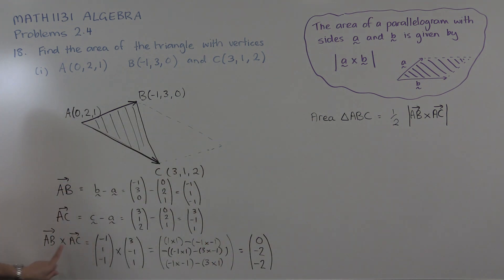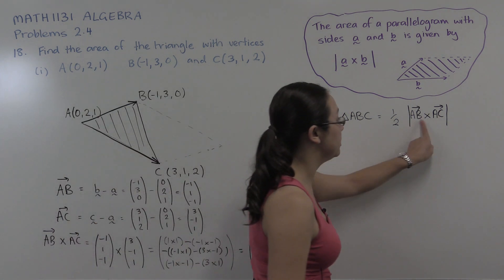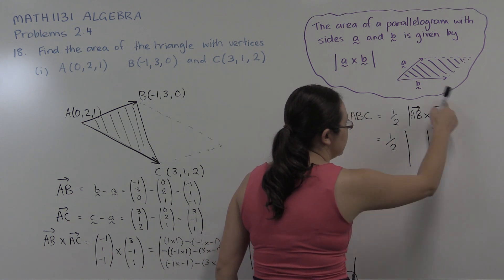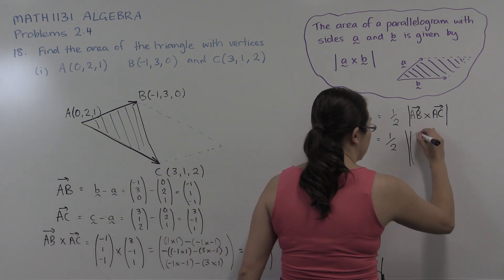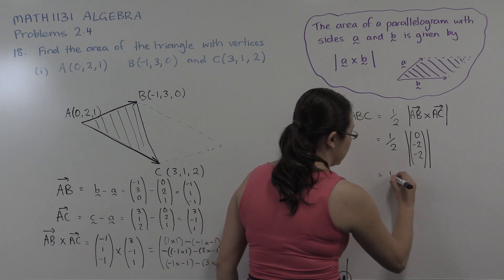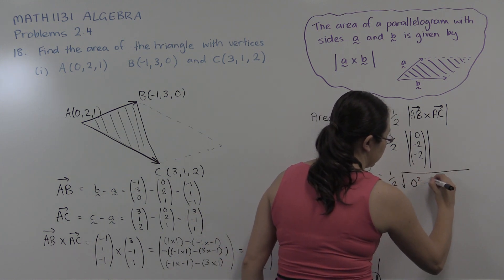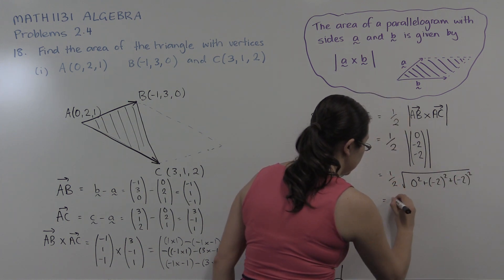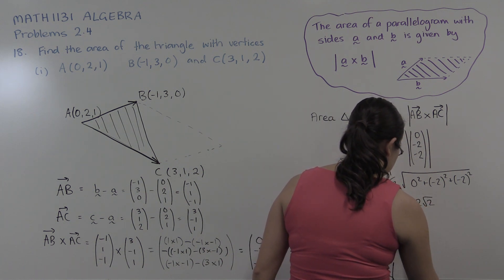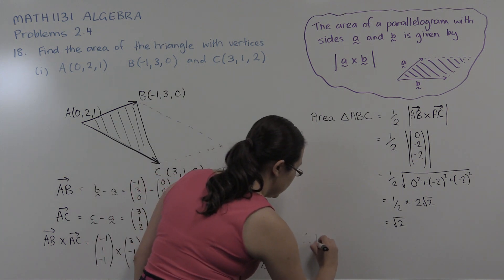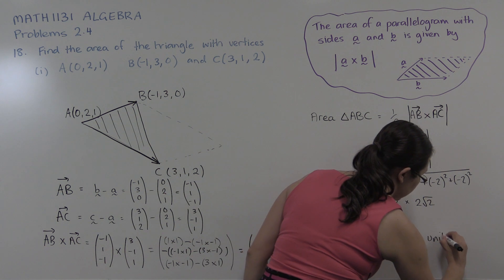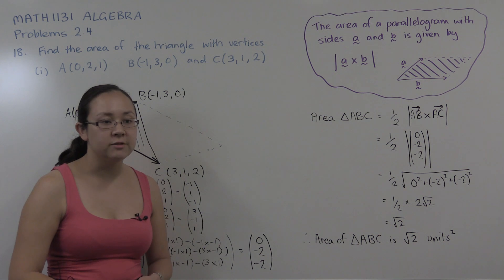So the cross product of AB and AC is the vector (0, −2, −2). The area of our triangle is half the length of the cross product. The length of (0, −2, −2) is the square root of 0 + 4 + 4 = square root of 8 = 2 root 2. So we have a half times 2 root 2, which is just the square root of 2. Therefore, the area of triangle ABC is √2 square units. And that's how we calculate the area of a triangle given its vertices.